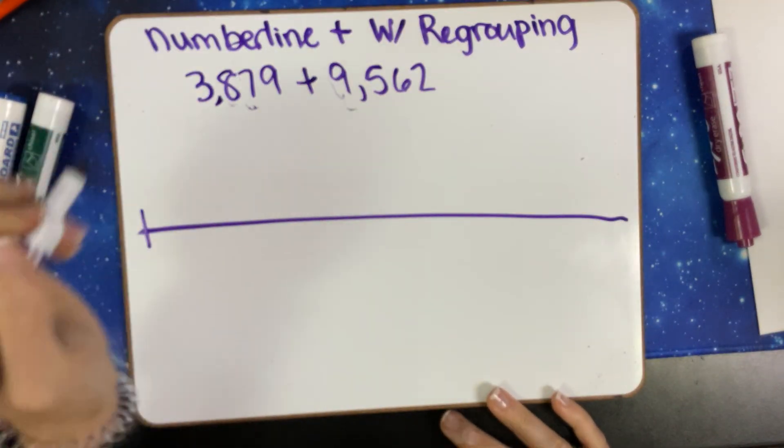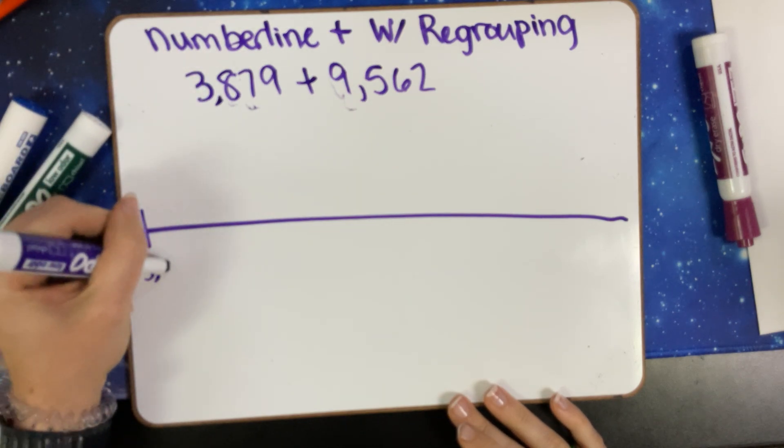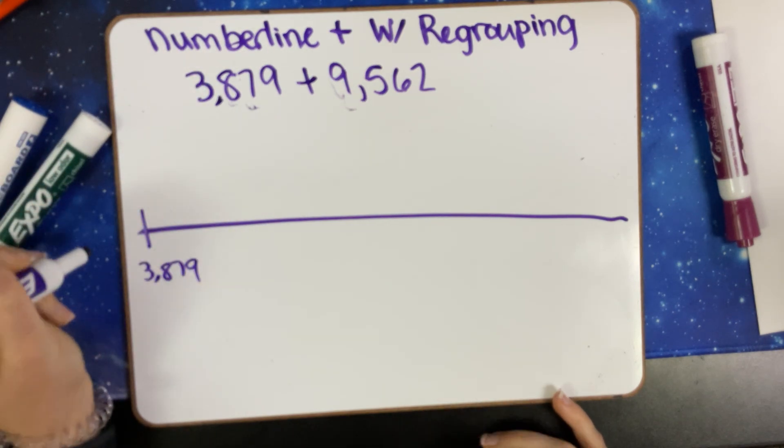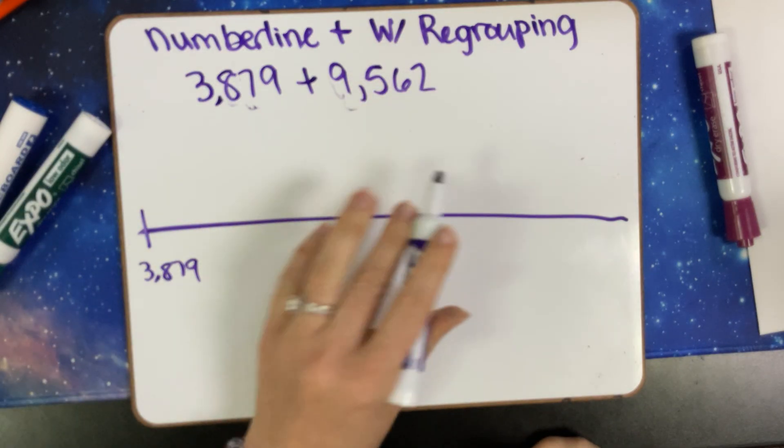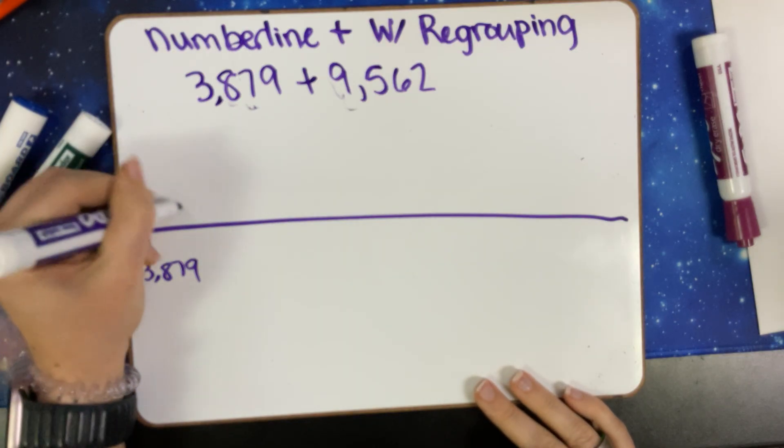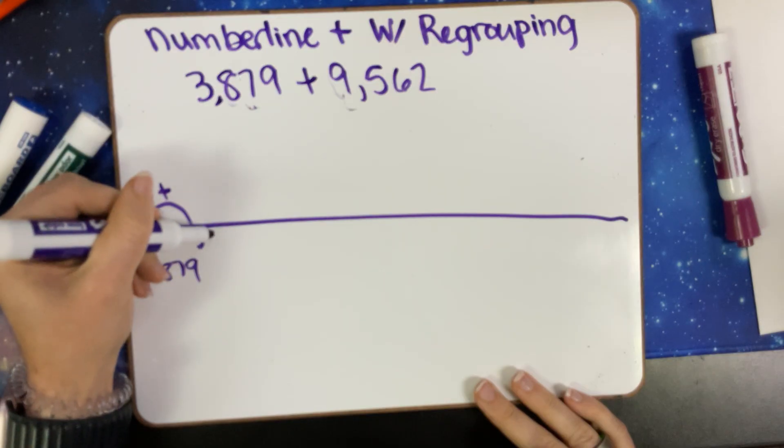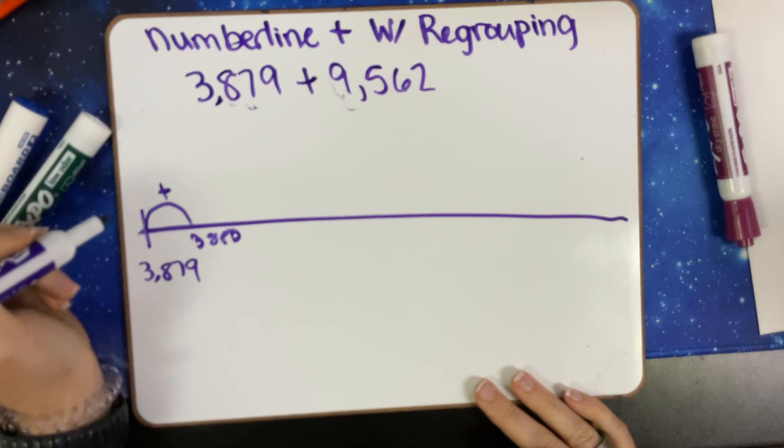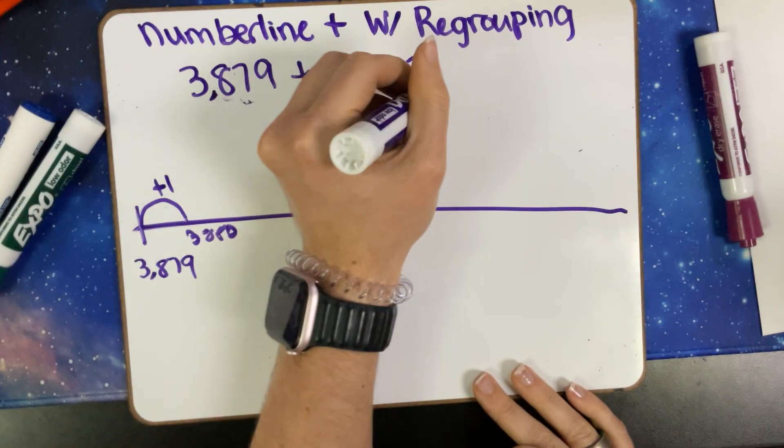We're going to start with our lower place value, with our first number, so I'm going to have 3,879 on my number line and I'm going to be adding this much. My first step, especially when I'm regrouping, I can make this number as friendly as possible, so I'm going to start by adding 1 and I'm going to have 3,880. So we'll say plus 1.